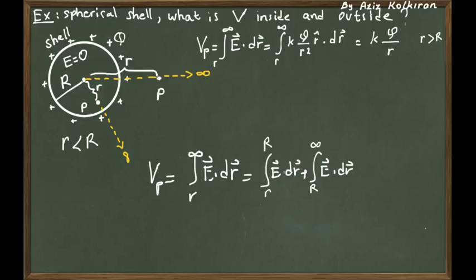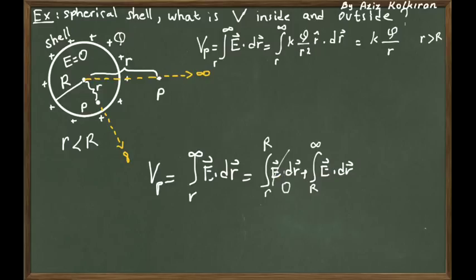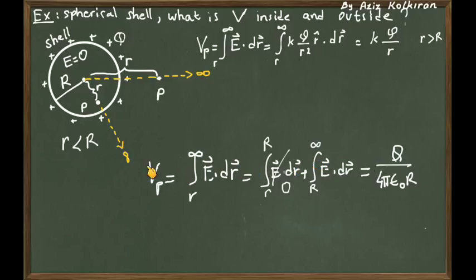Why do we have to break up the integral into two pieces? Because the electric field is not the same everywhere. For points inside the shell, we already calculated by using Gauss's law that the electric field inside a charged shell is equal to zero. So the contribution from the first integral will be zero, because from r to capital R the electric field is zero. We are only left with the second integral, which is easy, and it equals K times Q divided by capital R.